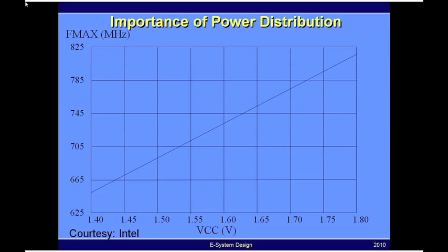The y-axis is called fmax, and that represents the maximum operating frequency of an IC — in this case, let's call that a microprocessor. The x-axis is your supply voltage VCC. In any microprocessor or IC, around the nominal operating voltage, the relationship between fmax and VCC is a linear function, and that is what is shown here.